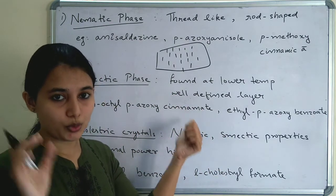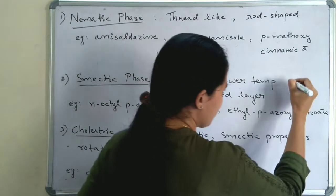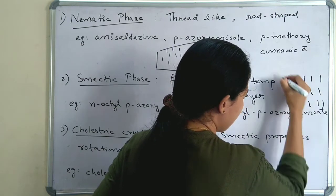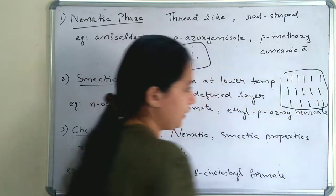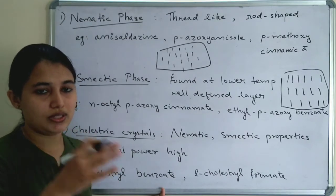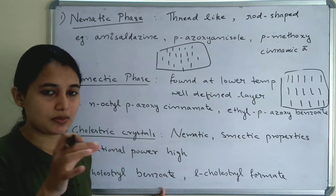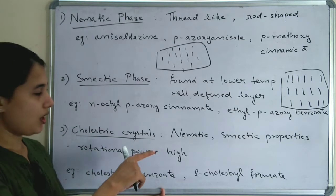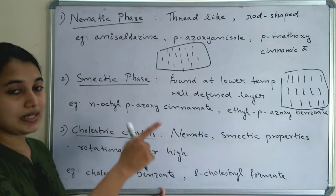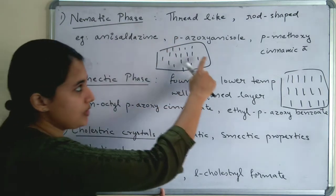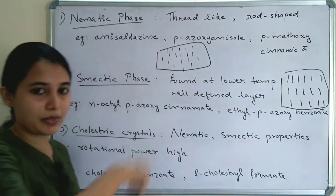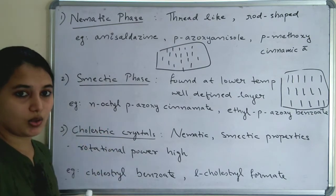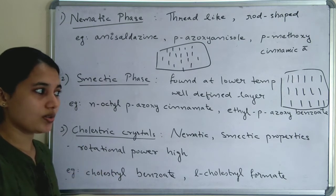In the smectic phase there is a positional order — molecules are arranged in a parallel position with a well-defined layer arrangement. The word smectic means cleaning, so it is like a soap. The example of smectic phase is N-octyl-para-oxy-cinnamate and ethyl-para-oxy-cinnamate. In the nematic phase, the example was para-methoxy-cinnamic acid.